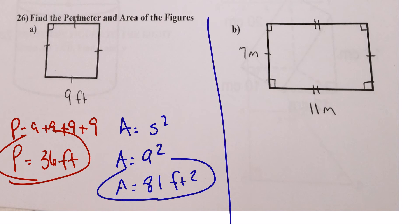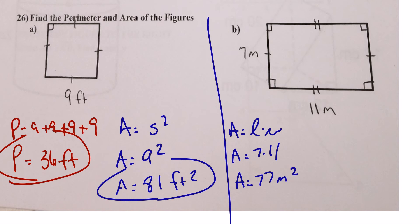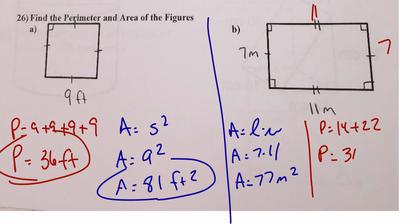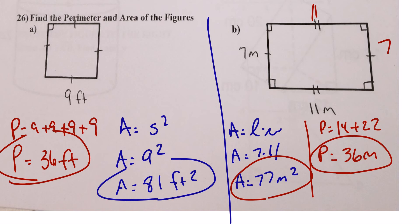For the rectangle: area = length × width = 7 × 11 = 77 square meters. Perimeter: I know it's 11 and 7 on each side, so perimeter = 14 + 22 = 36 meters. Make sure you have no square unit for the perimeter and square meters for the area.